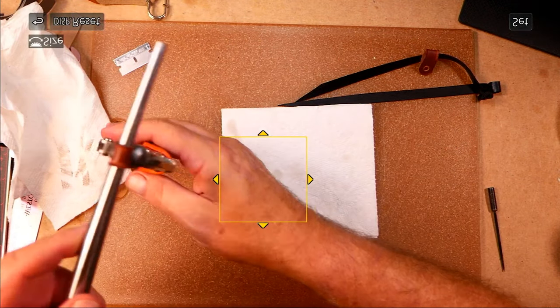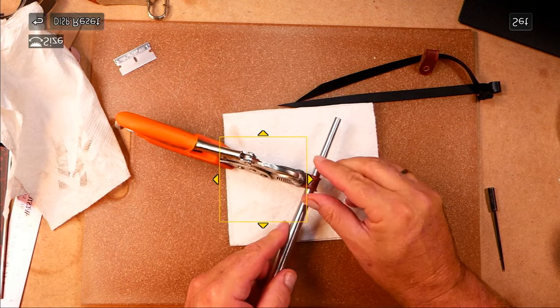This is just an ironworker's guide. We're just pre-forming the bracelet so we have a nice radius to them.